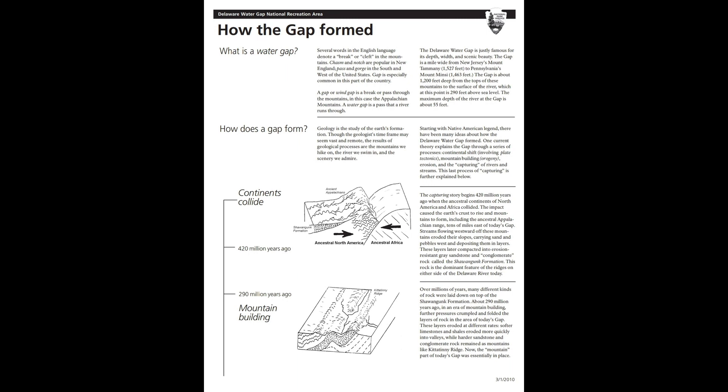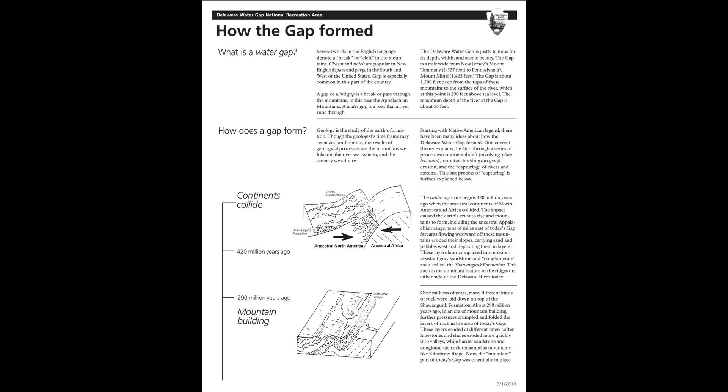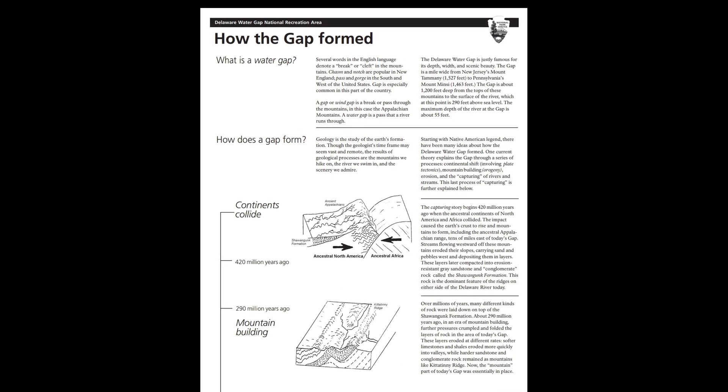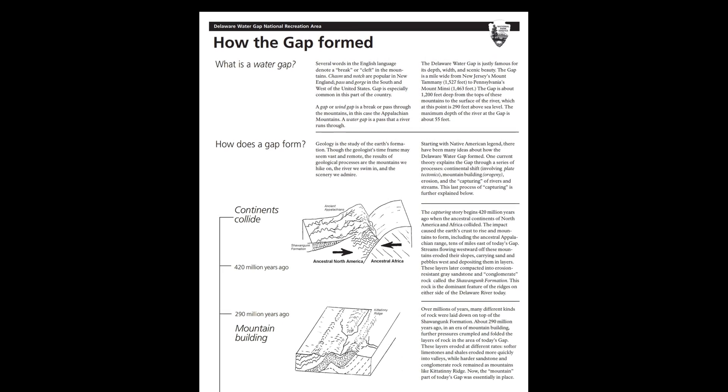Several words in the English language denote a break or cleft in the mountains. Chasm and notch are popular in New England, pass and gorge in the south and west of the United States. Gap is especially common in this part of the country. A gap or wind gap is a break or pass through the mountains, in this case the Appalachian Mountains. A water gap is a pass that a river runs through.